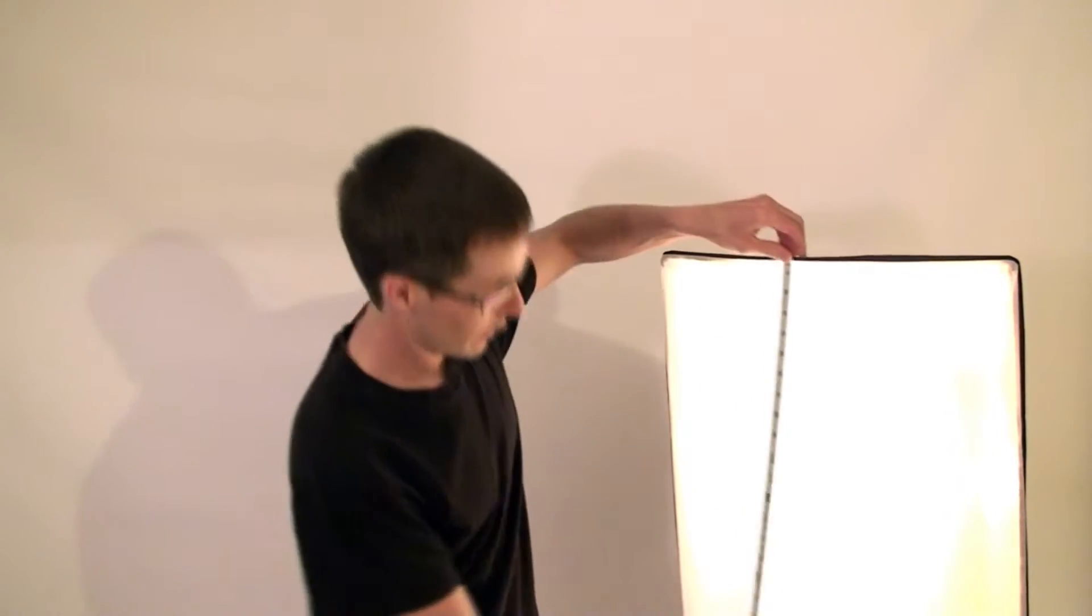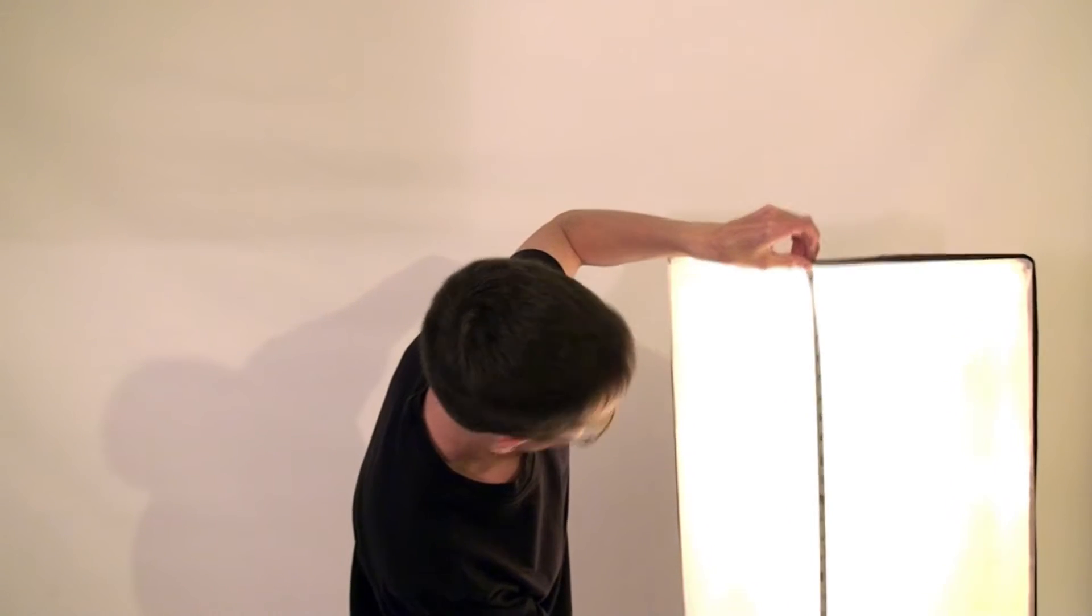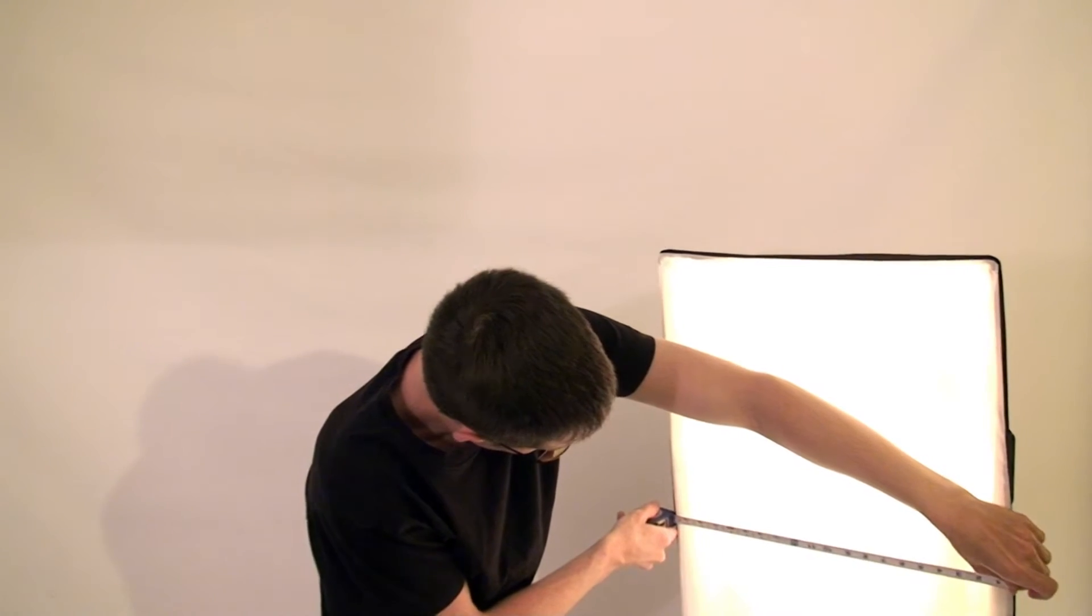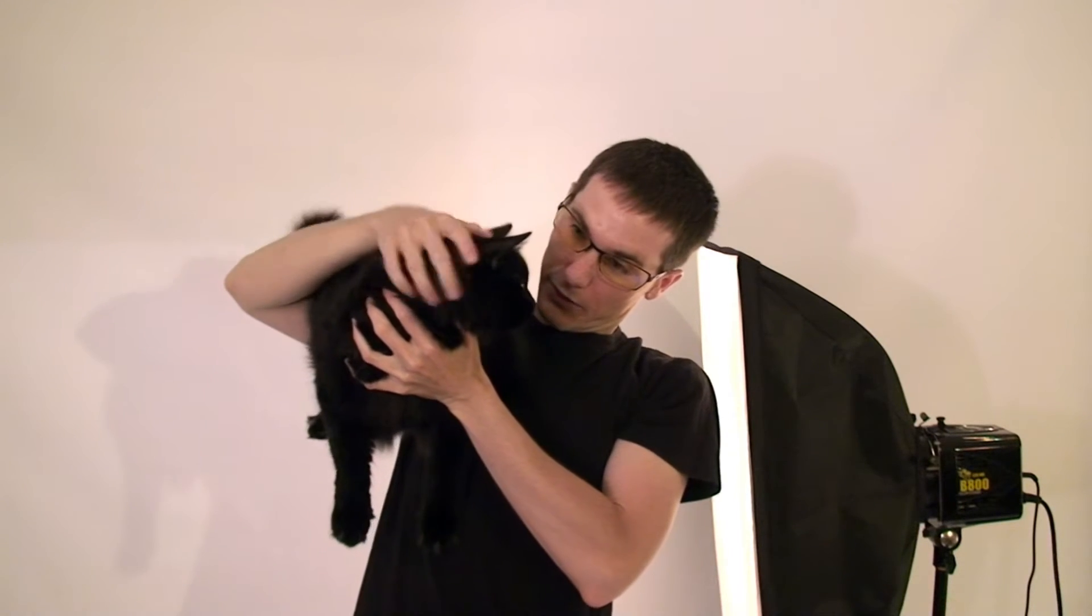So the softbox today is 27 by 20, 28 by 20-ish. It is mounted on the same Alien Bee B800 strobe. I'm going to attempt to place this softbox at roughly the same distances we had the beauty dish. So that should give you a pretty good comparison of the different types of light and different distances based on the light modifier.